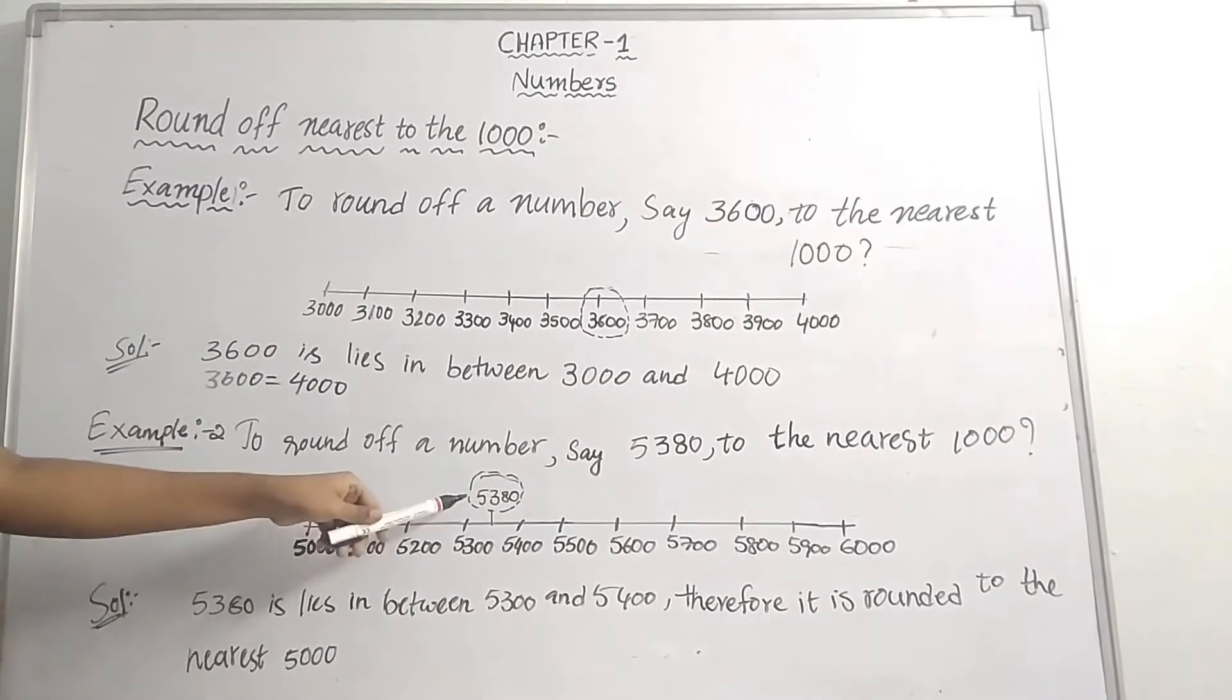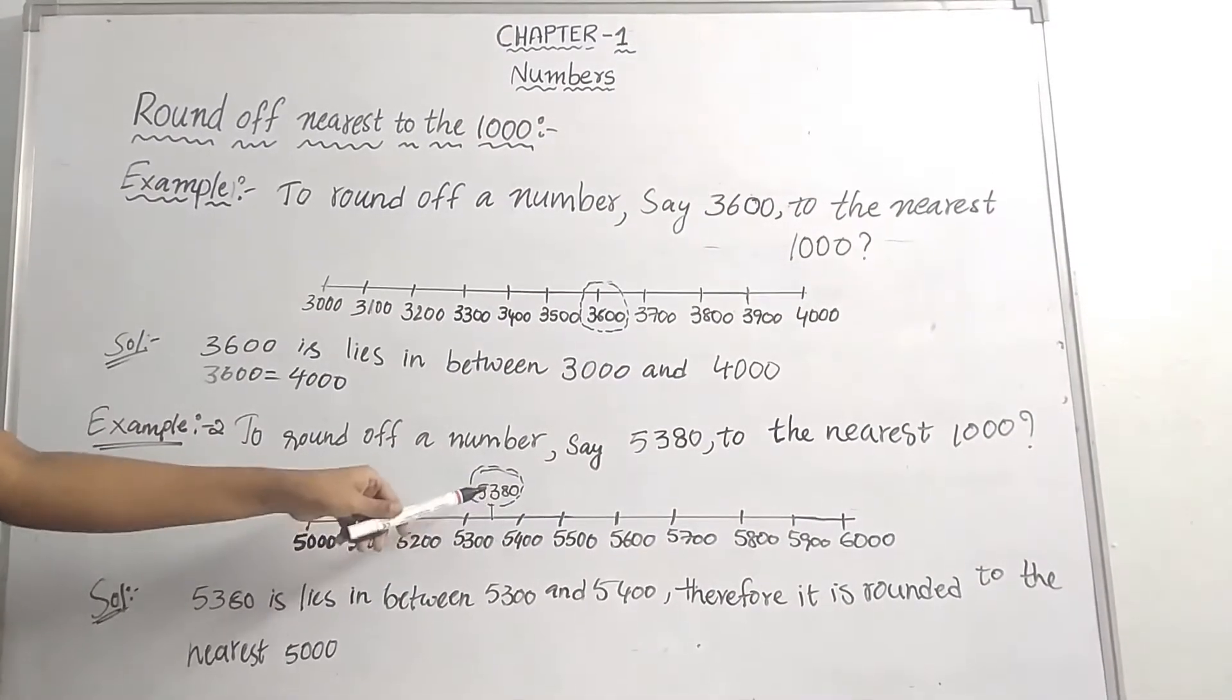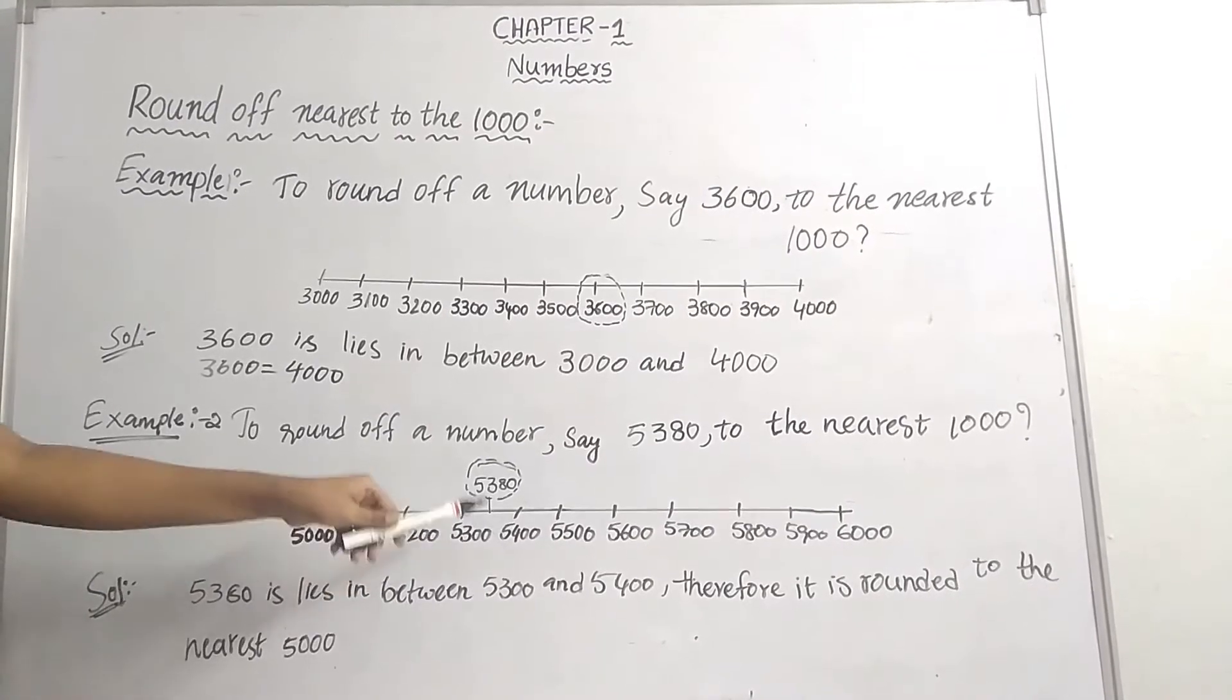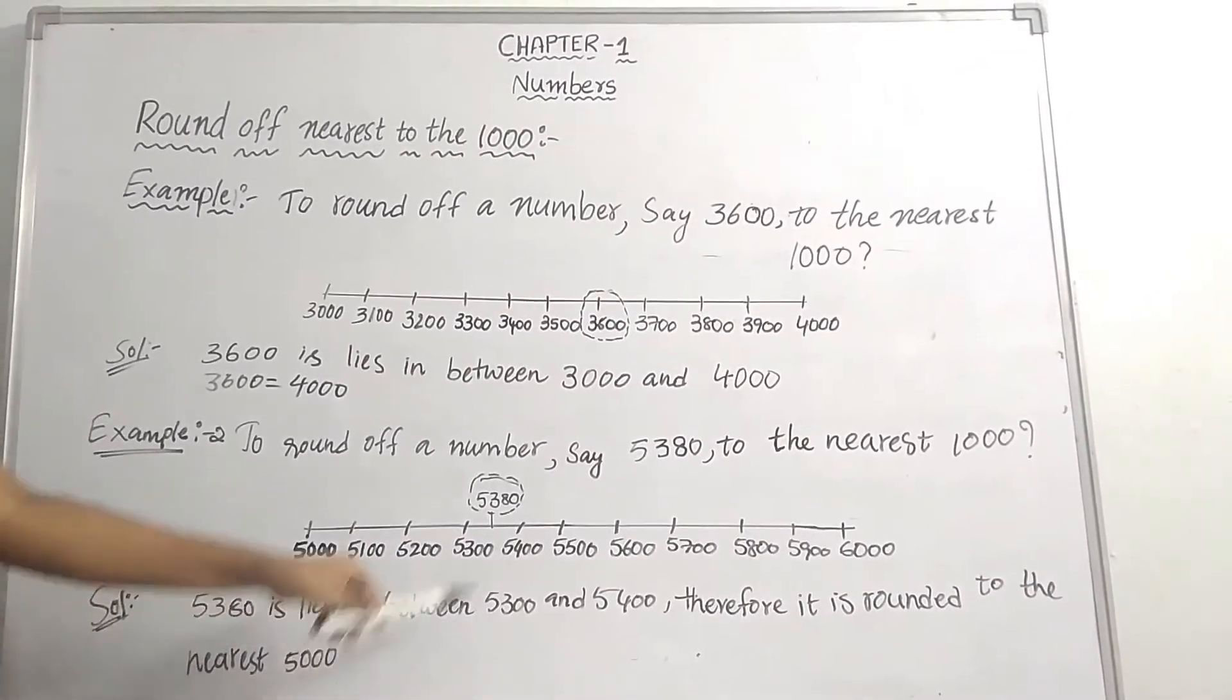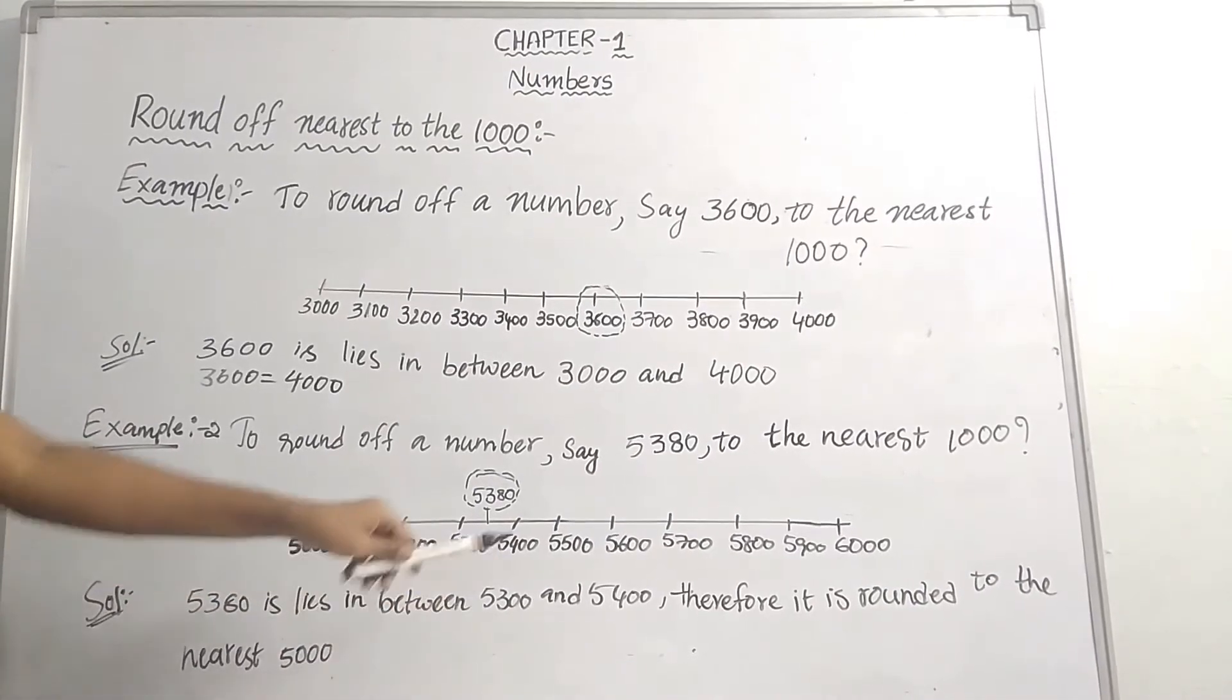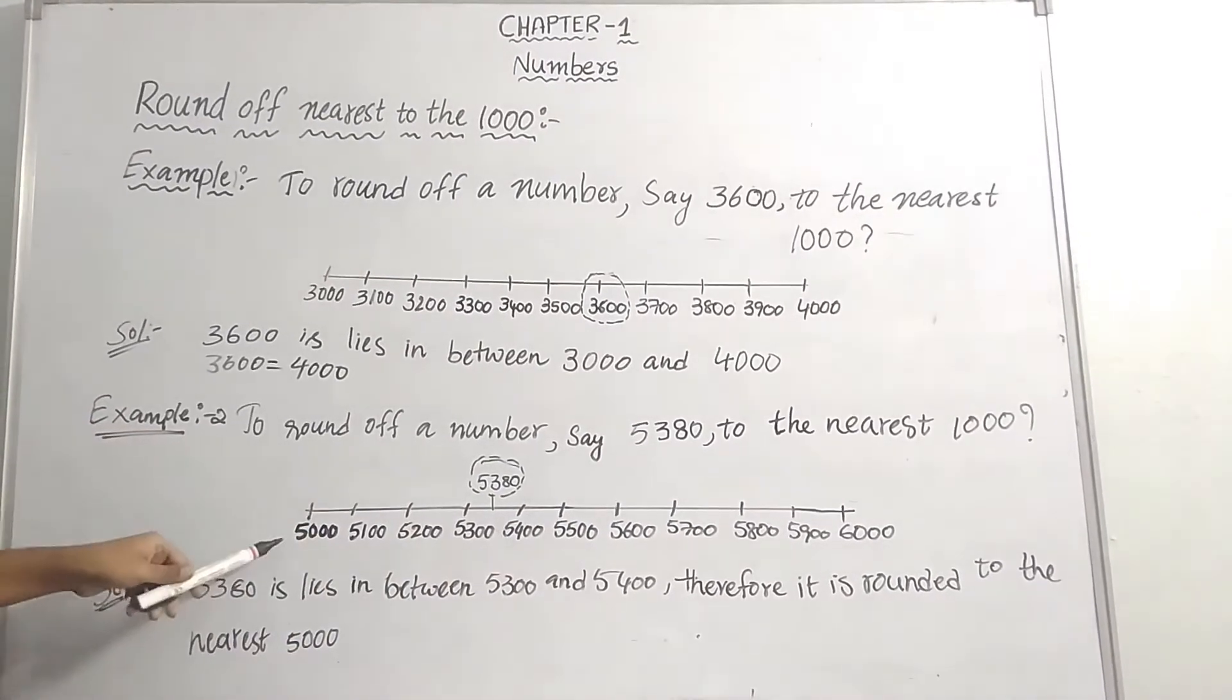So 5380 lies in between 5300 and 5400. It is nearest to which value? 5000.